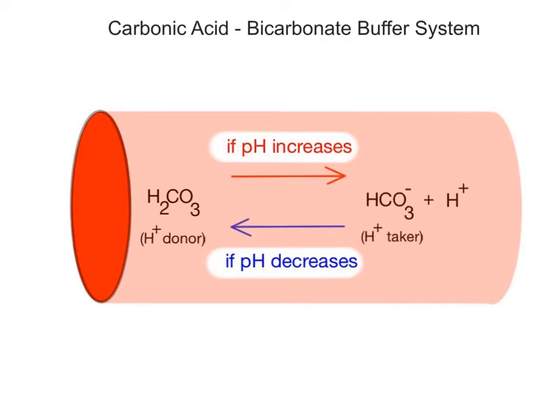If blood pH is too high, carbonic acid in the bloodstream will dissociate into bicarbonate ions and hydrogen ions. The equation moves from left to right if blood pH is too high. As the concentration of hydrogen ions in the blood increases, the pH decreases.